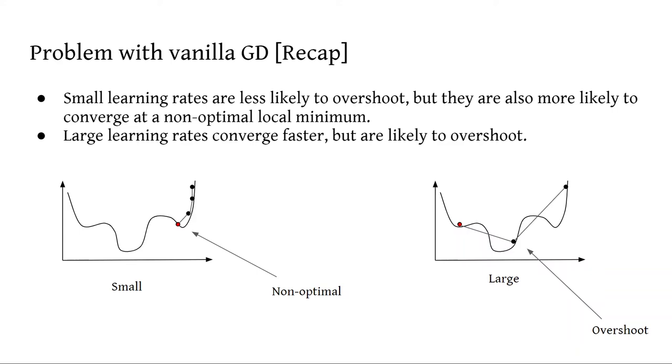So what is the problem with vanilla gradient descent? The problem is that when you choose small learning rates, they are less likely to overshoot, but they are more likely to converge at a non-optimal local minimum, as you can see in this diagram. Here it's converging in this non-optimal local minimum, but it should have converged here at the optimal local minimum.